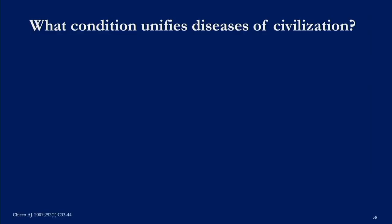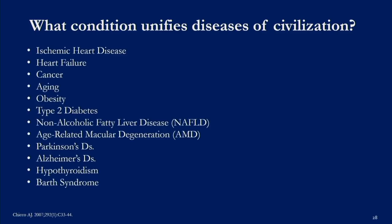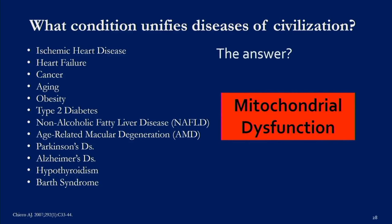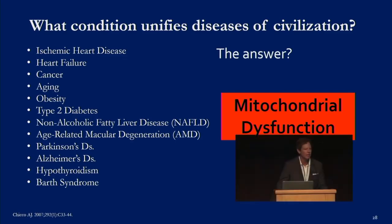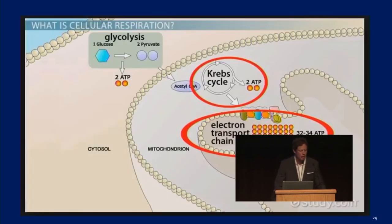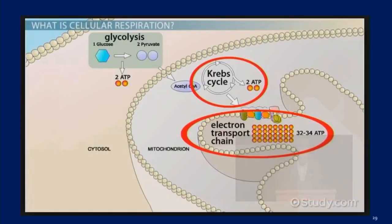How could a high omega-6 PUFA diet induce obesity without increasing calories? The answer is energy dysregulation — two simple concepts: one, energy is stored more efficiently; and two, energy utilization and expenditure decreases. So when we're gaining weight and getting obese, we have less energy expenditure and store it more easily. What condition unifies all these diseases of civilization — ischemic heart disease, heart failure, cancer, aging, obesity, type 2 diabetes, non-alcoholic fatty liver disease, AMD, Parkinson's, Alzheimer's? The answer is mitochondrial dysfunction.